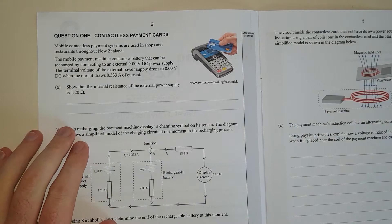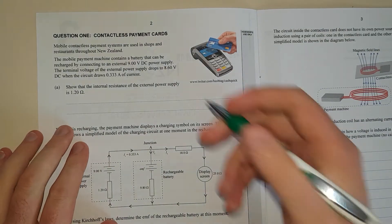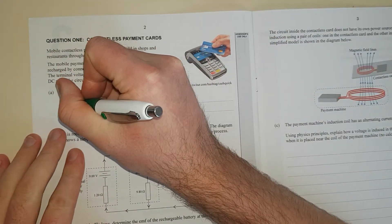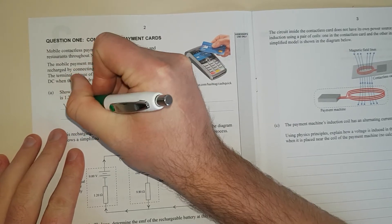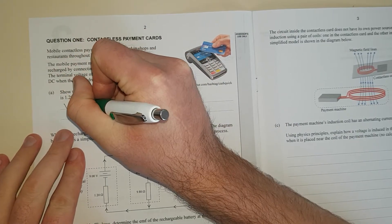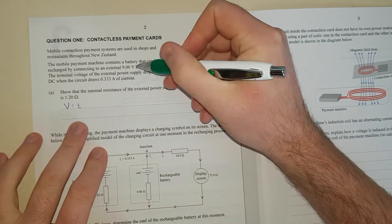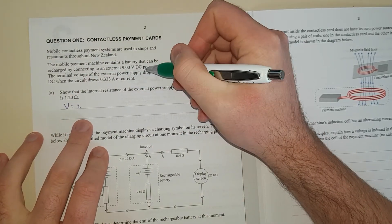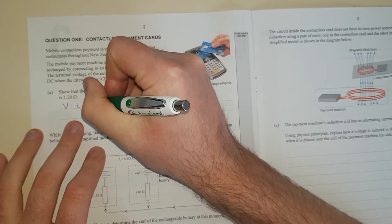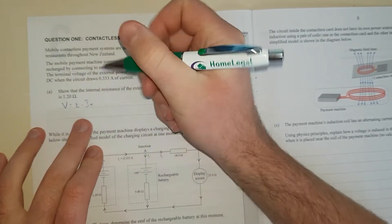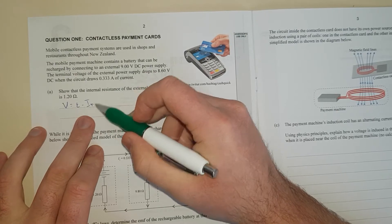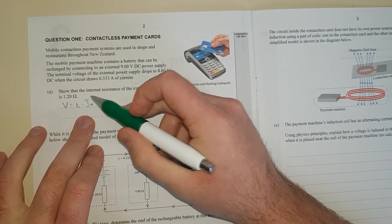This is a formula that's not on your formula sheet that unfortunately you just have to memorize. The voltage you were given, V, is equal to the EMF, which is essentially the sticker voltage or the voltage that should be on the label, so that's 9V in this case, minus I little r. Technically, this is the voltage that's used by the battery, so this is the voltage drop.